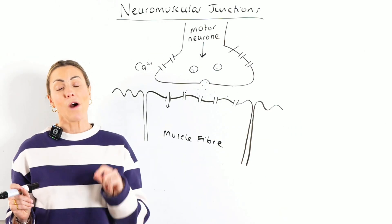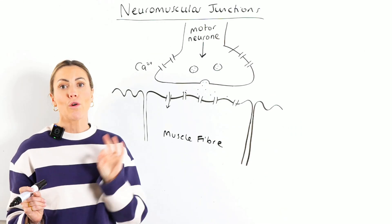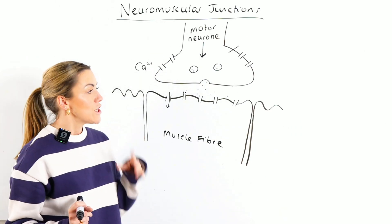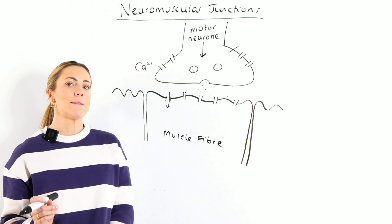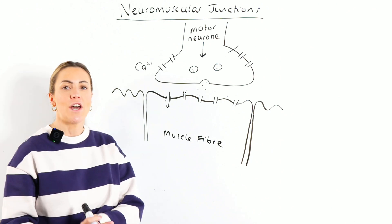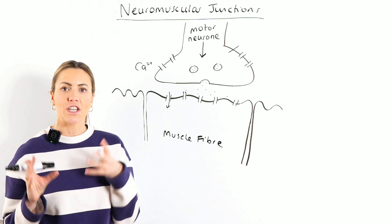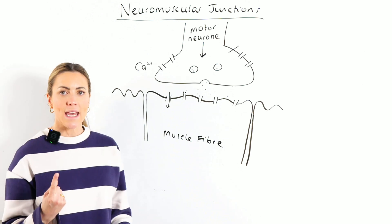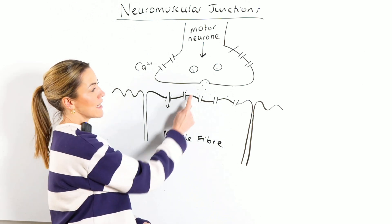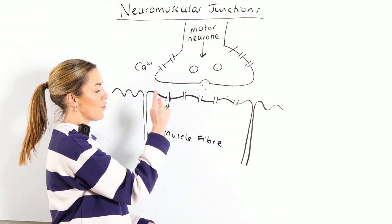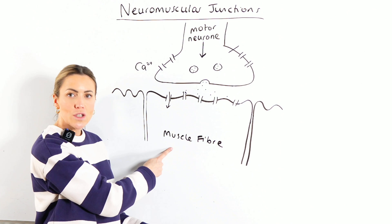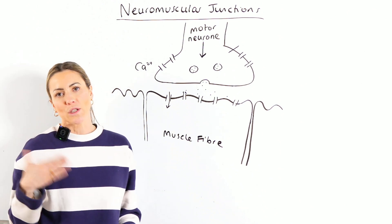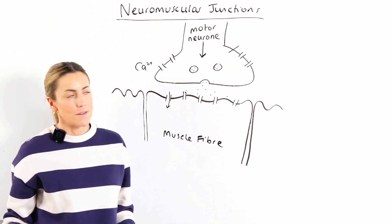In this video, we're going to explain what happens at a neuromuscular junction. This is really similar to what we've learned about a cholinergic synapse, but here we've got a synapse between a motor neuron and a muscle fiber instead of between two neurons.